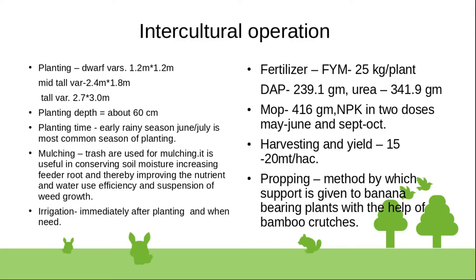Fertilizer dose: FYM 25 kg per plant, or DAP 239.1 grams, urea 341.9 grams, MOP 416 grams per plant. NPK dosage is applied in May to June and September to October.